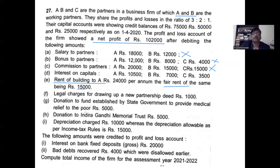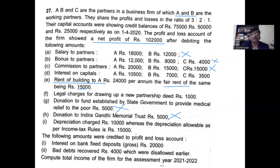Donation to a fund established by the state government for medical relief to poor — not related to business, so disallow it. Also consider it for 80G deduction later. Indira Gandhi Memorial Fund is also not related to business, so disallow it. Depreciation charged is 10,000 but allowable as per income tax rules is 15,000, so the additional 5,000 comes in the deductions side.